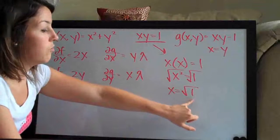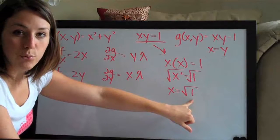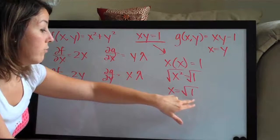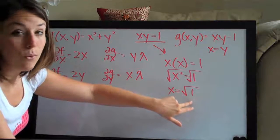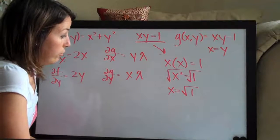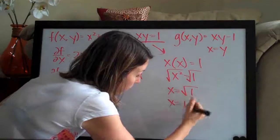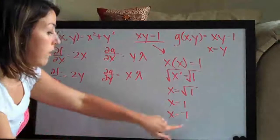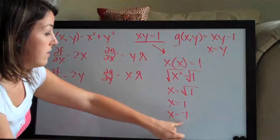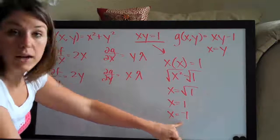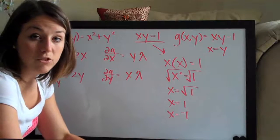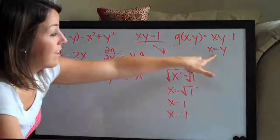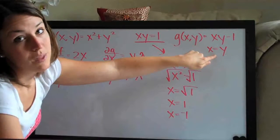Now this is where we have to be careful, because you might say x equals 1. Well, it also equals negative 1, and we need to always remember that if we're looking at square roots, it can be positive or negative 1. So x can equal 1, but x can also equal negative 1. Since we have both of these, all we have to do now to find the potential maximum or minimum points is plug these two answers for x back into our relationship that we found.